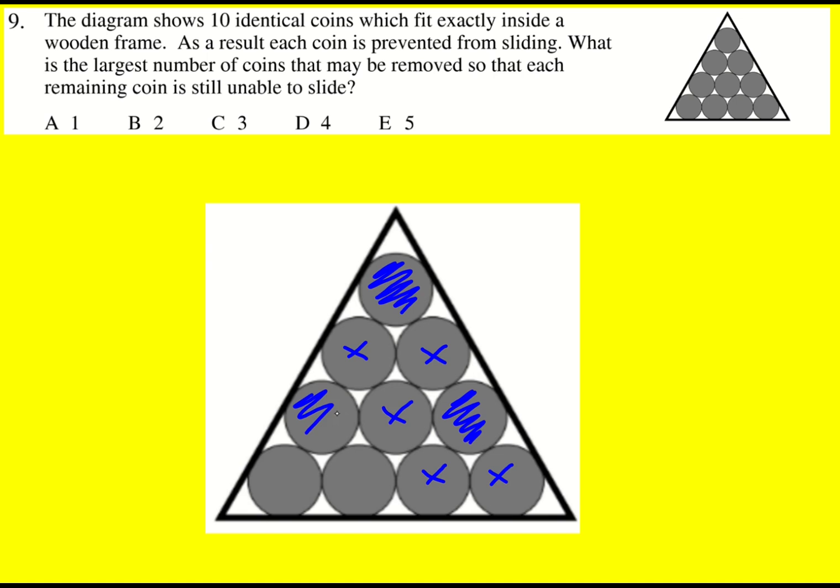Three would be possible because if I took those three away actually all the rest of them wouldn't be able to slide. That one can't go into there. There's not enough gap to get through. The question is can we do any better than that?